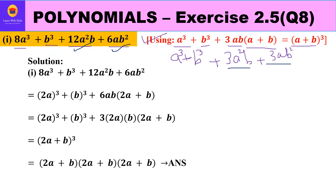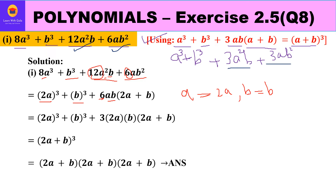The product in the question and the identity are exactly the same. We have 8a³, b³, 12a²b, and 6ab², which we can write in the form of the identity. Now 8 is 2³, so we can write 2a whole cube; b³ can be written as b whole cube. For 12 and 6, we can say 6 is a common factor, and a and b are also common — inside the bracket we are left with 2a + b.